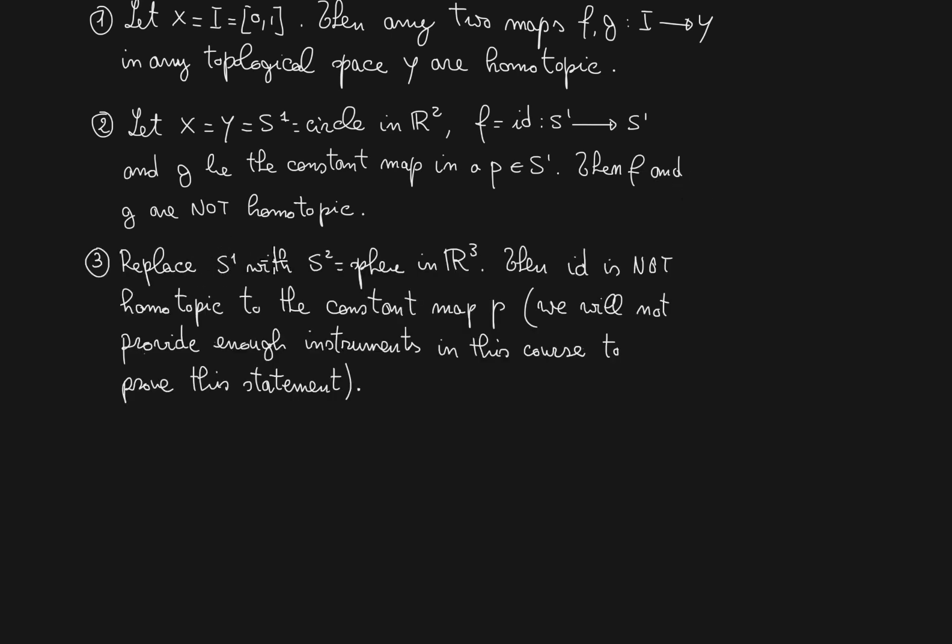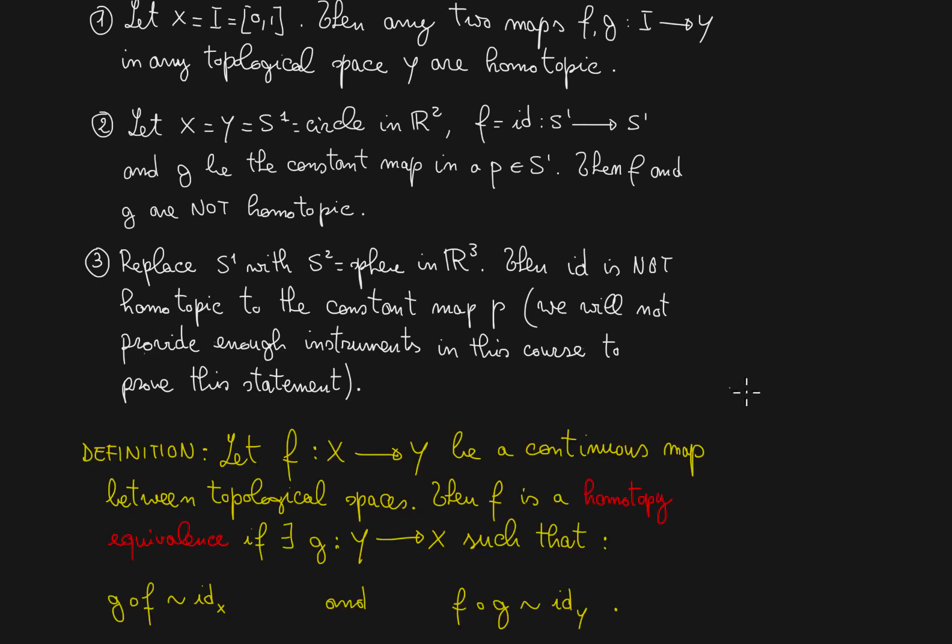If we replace S1 with S2 in example number 2, S2 being the sphere in R3, then again we get the same statement, that the identity map on S2 is not homotopic to the constant map P, but in this case we will not be able to prove this in this course. This will require higher technology that we will not see in this course.